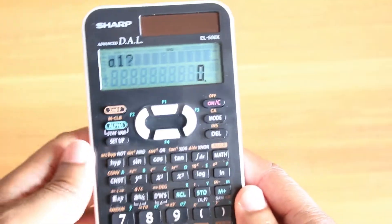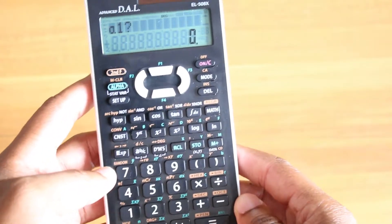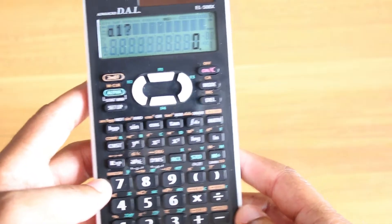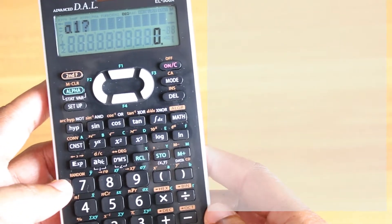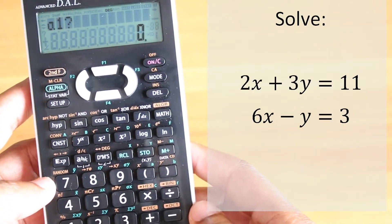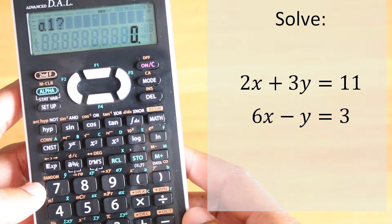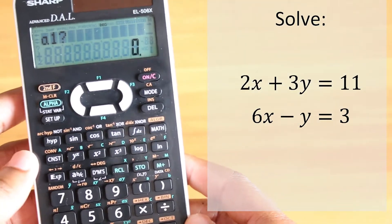Immediately you are prompted for the constants of the first equation. Let's say we have the question 2x plus 3y equals 11, and 6x minus y equals 3. That's the system of equations.